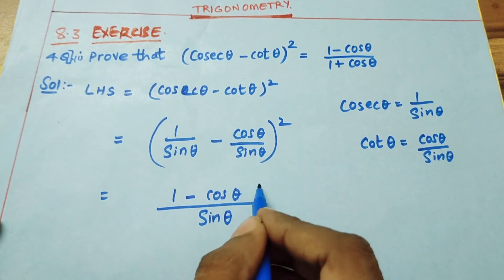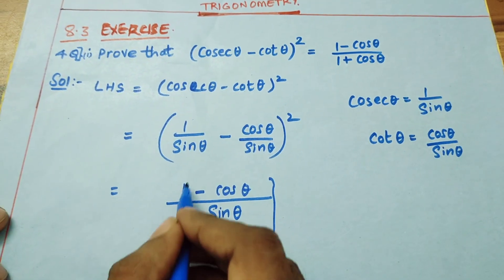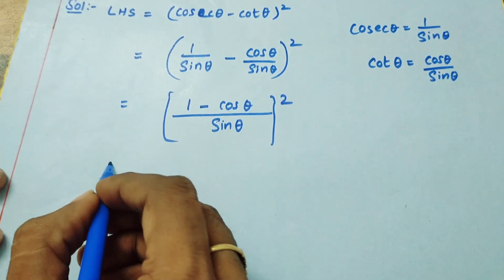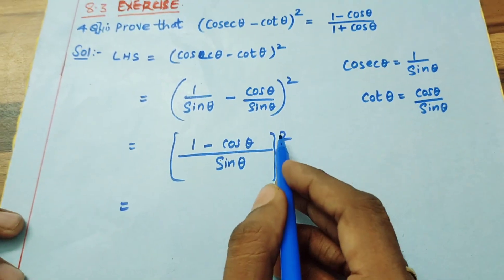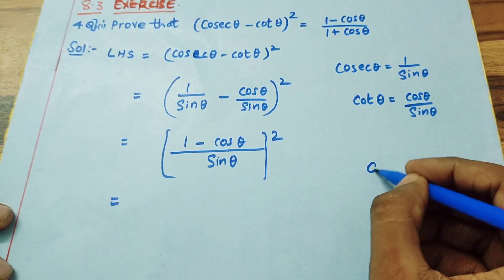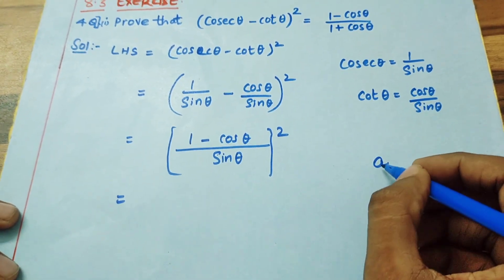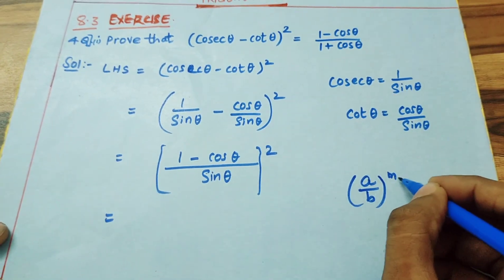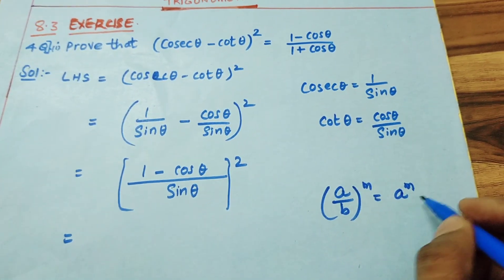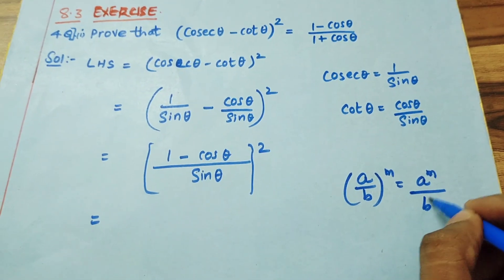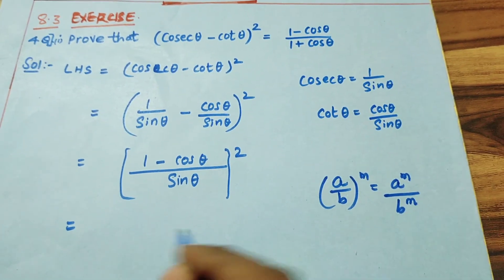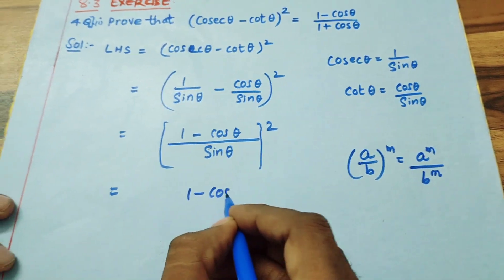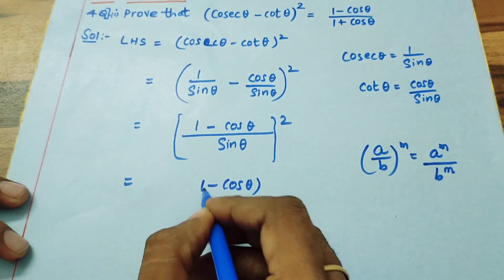This whole square is applicable using the rule: (a/b)^m = a^m / b^m. In the same way, we get (1 − cos θ)² / (sin θ)².